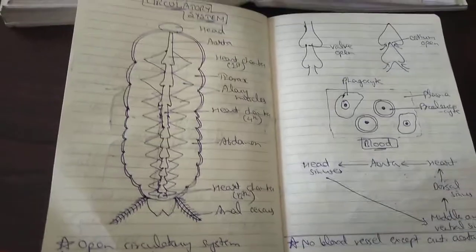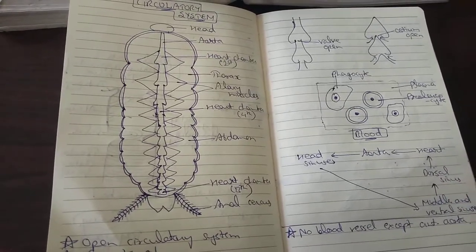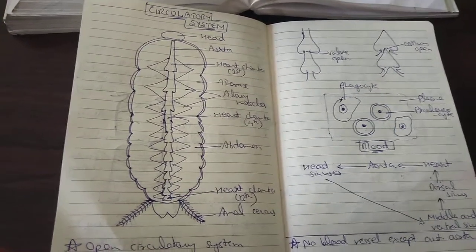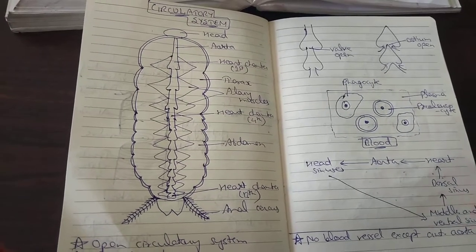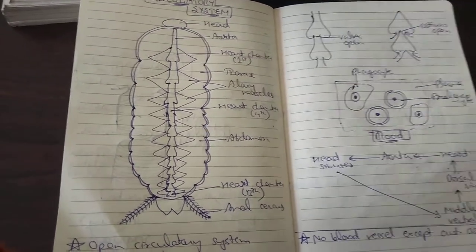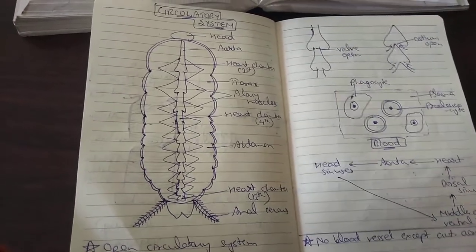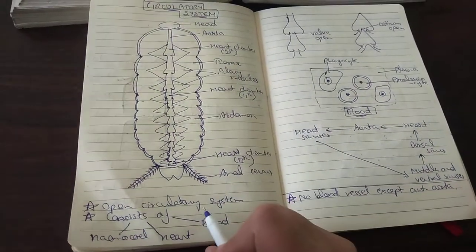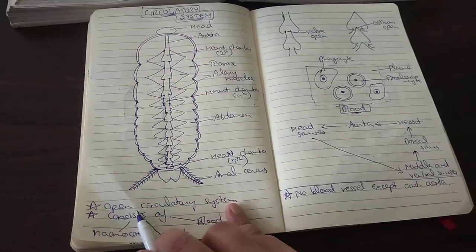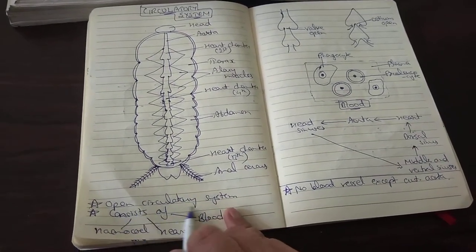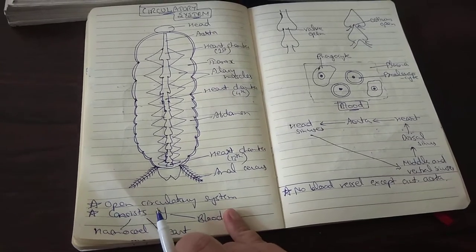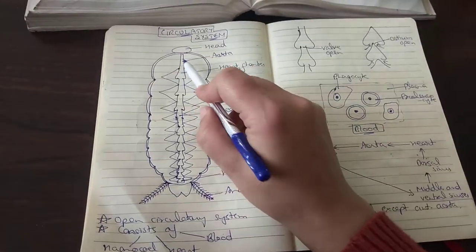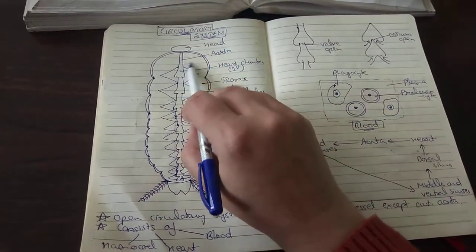Now comes the circulatory system of the cockroach. The circulatory system is involved in circulating all the waste material and food materials and bringing about removal of waste matter from the body — basically it helps in circulating fluid throughout the body. Circulatory system is basically of two kinds: open or closed. In case of cockroach it is an open circulatory system because it lacks blood vessels and the blood flows freely in the open spaces. The cockroach open circulatory system consists of hemocele, heart and blood, and there are no blood vessels except the one on the anterior side referred to as the anterior aorta.